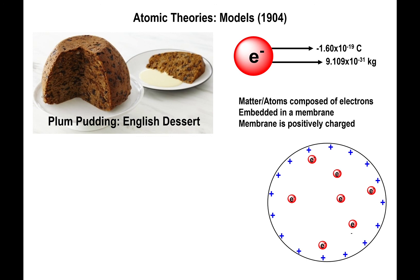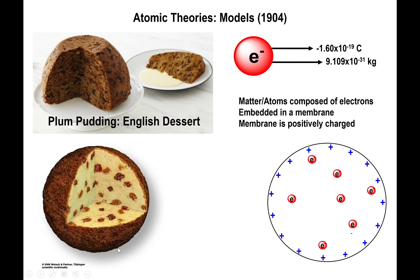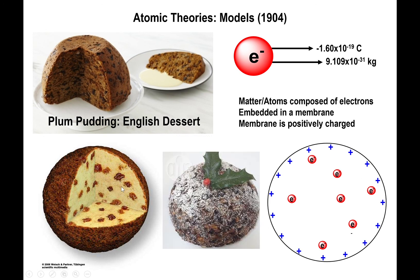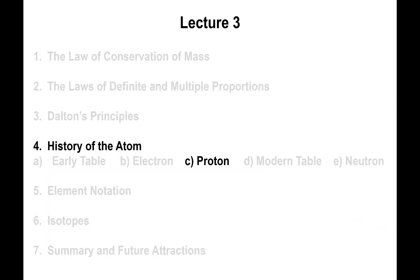This model is known as the plum pudding model of the atom. Thomson was wondering why that name — it turns out plum puddings are English desserts. The pudding itself represents the membrane with the positive charge, and the plums embedded inside represent the electrons. Looking at an actual plum pudding, you can clearly see it matches the model he was thinking of. So Thomson had a reasonable idea with the plum pudding model.